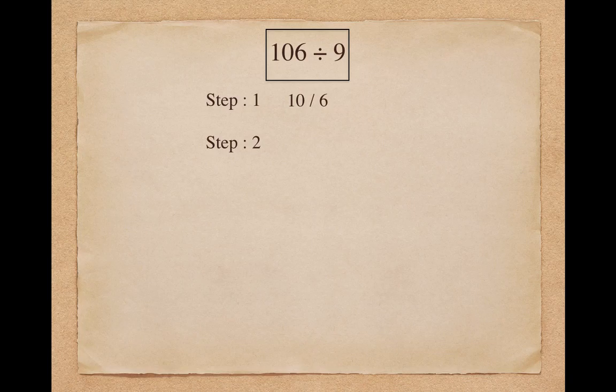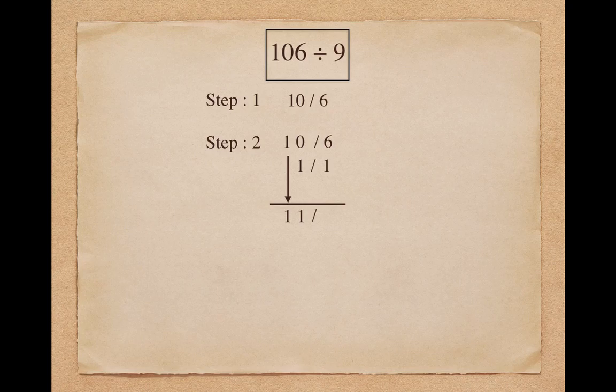To find the first digit of the quotient, put 1 as it is. To find the second digit of the quotient, make the summation of all the previous digits of the dividend, so 0 plus 1 makes 1. To find the remainder, make the summation of all the digits of the dividend, so 6 plus 1 plus 0 makes 7. So here the quotient is 11 and the remainder is 7.